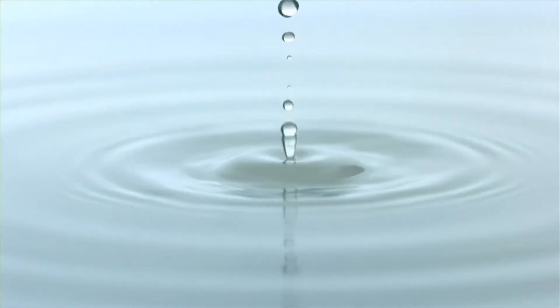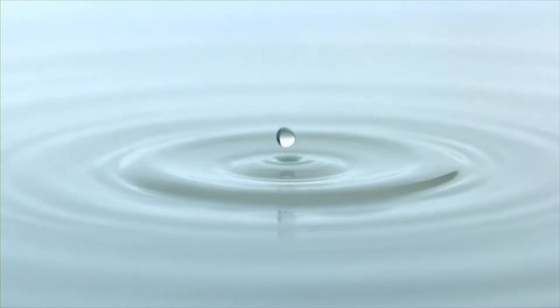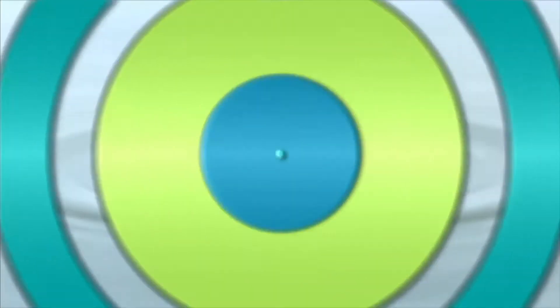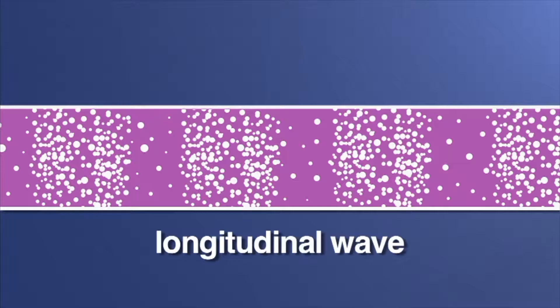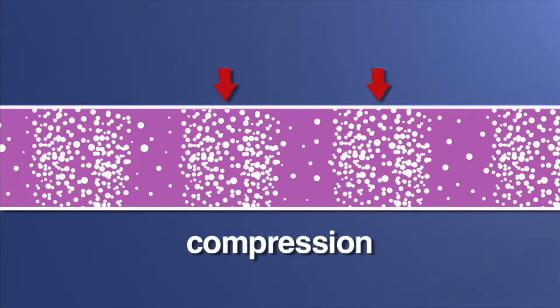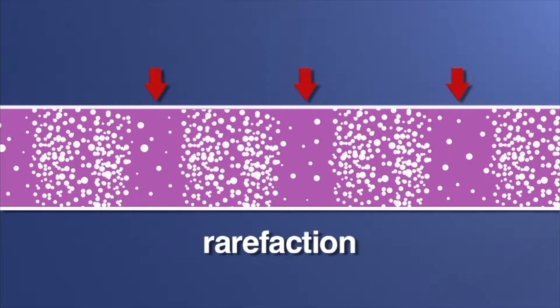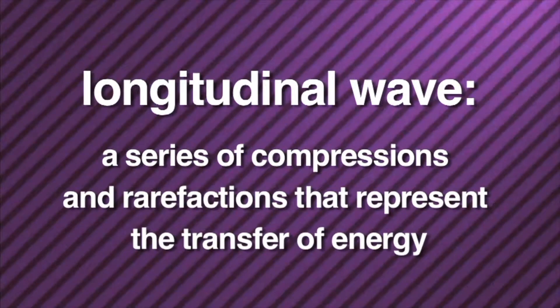You can better understand how a wave is formed by watching what happens when a stone hits the water. The water is disturbed, causing energy waves to go out from the source of the disturbance. Sound works the same way — a sound creates a disturbance and pushes the molecules away from it in the form of a wave. If you could see a sound wave, it would look something like this. A sound wave is a special type of wave called a longitudinal wave. Where the molecules are squeezed together, it's called compression. Where the molecules are stretched apart, it's a rarefaction. A series of compressions and rarefactions that represent the transfer of energy is called a longitudinal wave.